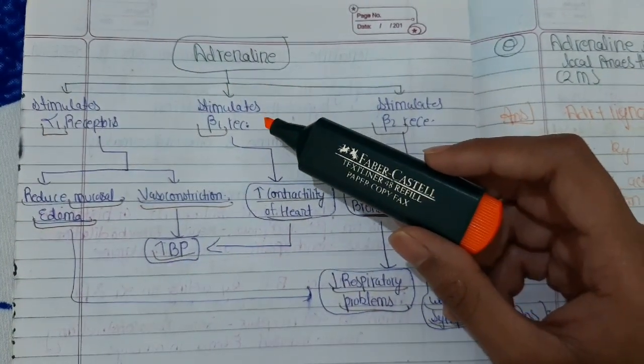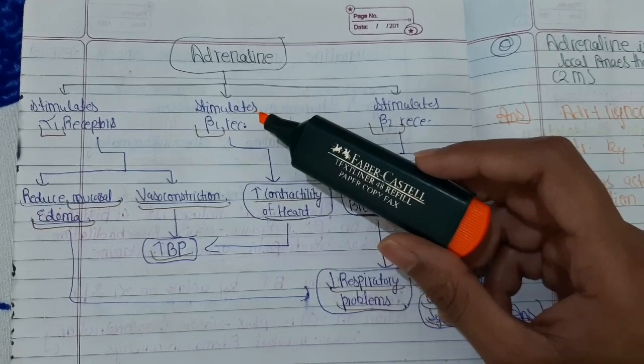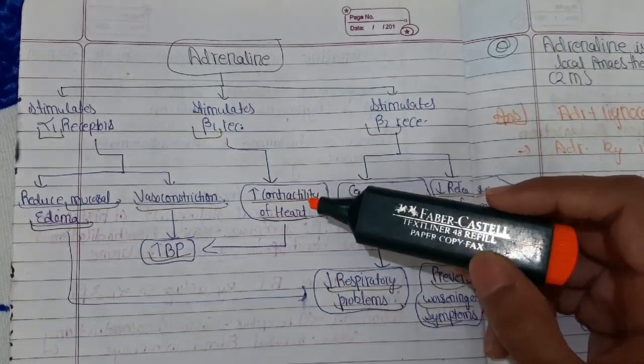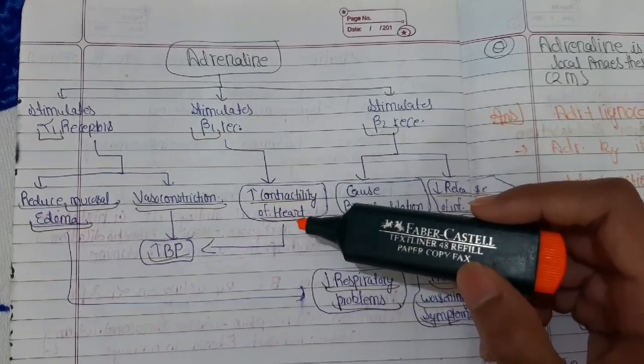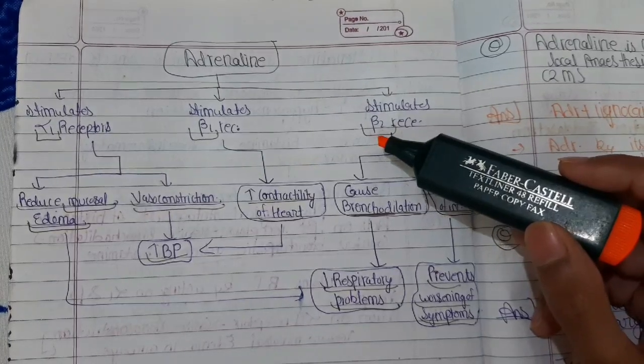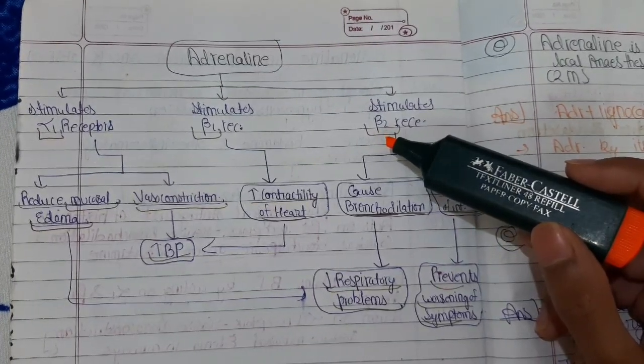The second action is through beta-1 receptors. Adrenaline stimulates beta-1 receptors, which increases contractility of the heart, leading to increased blood pressure. The third action of adrenaline is that it stimulates beta-